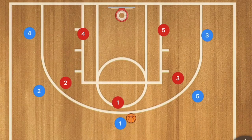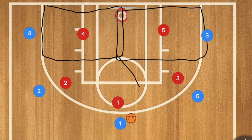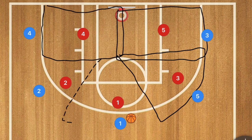As we see here, this is the 3-2 zone defense — red is playing defense. In this defense, we have player 4 and this would be his zone, player 5 and this would be his zone, player 3 and this would be his zone, player 1 and this would be his zone, and player 2 and this would be his zone.